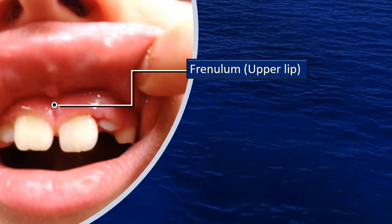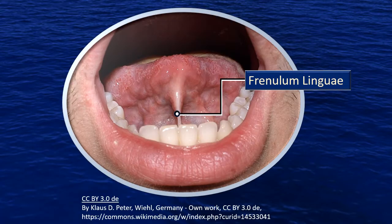Connecting the lips to the gingiva, and similarly connecting the tongue to the lower gingiva, there are some important folds of mucous membrane. In the midline along the sagittal plane, there is a frenulum of the upper lip — the superior labial frenulum. Here, the tongue is connected to the gingival area — you can see the frenulum linguae, also called the lingual frenulum.